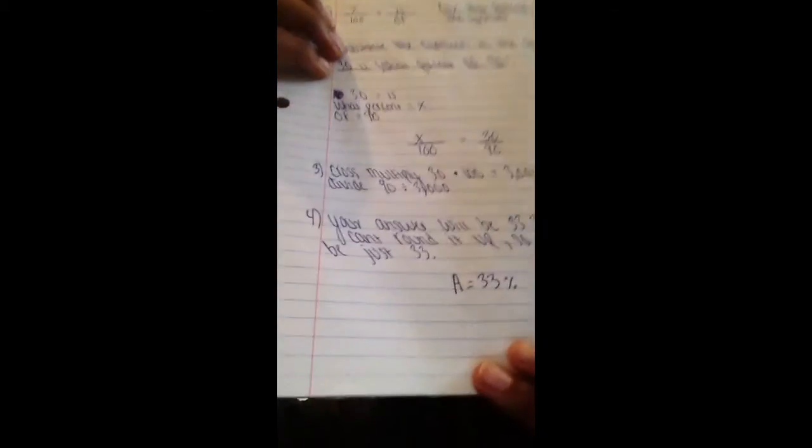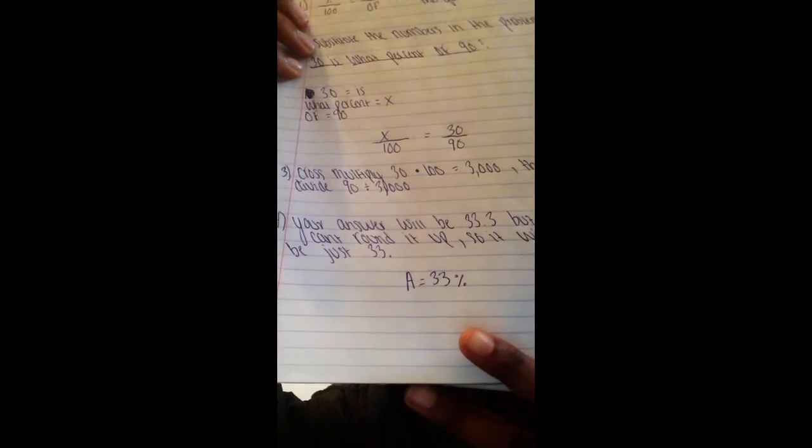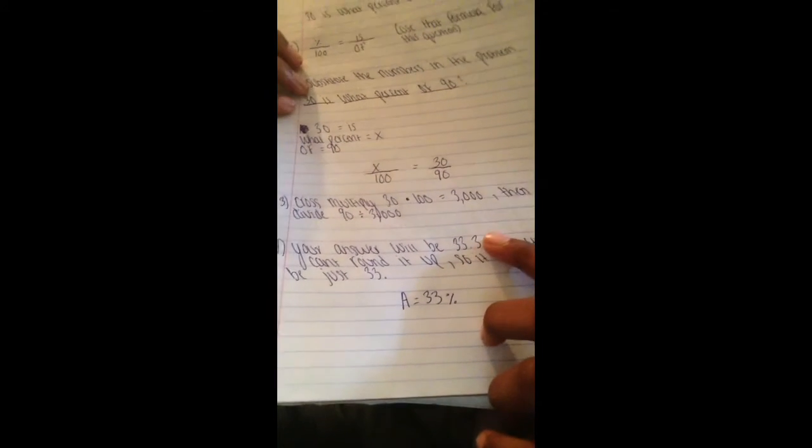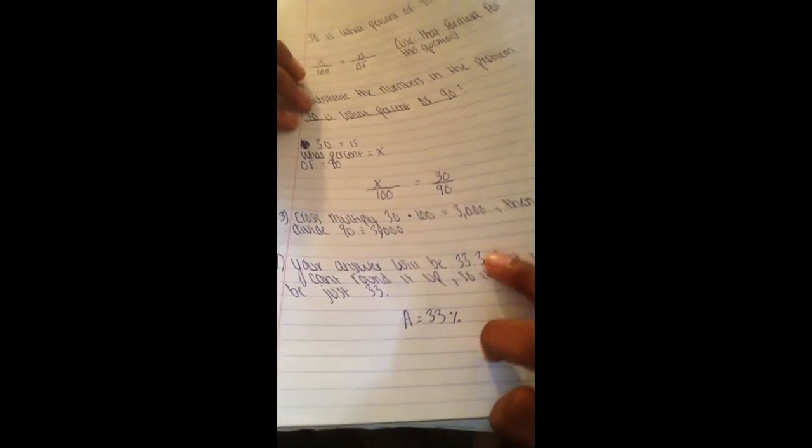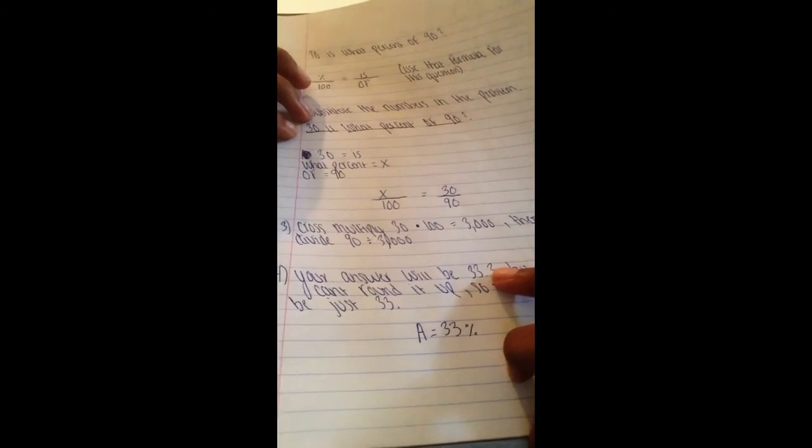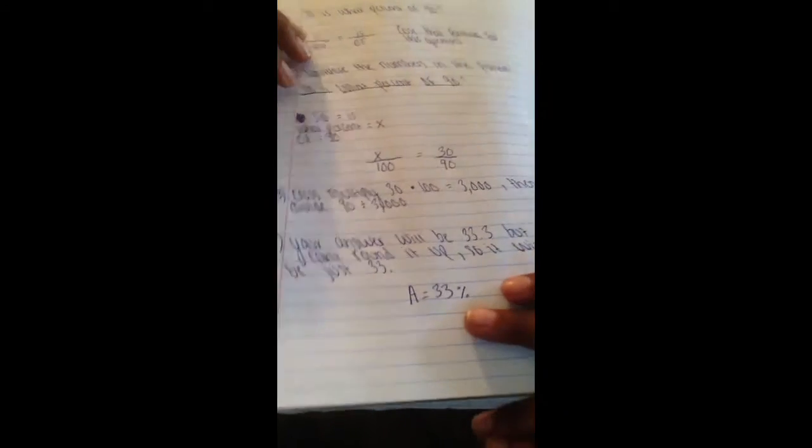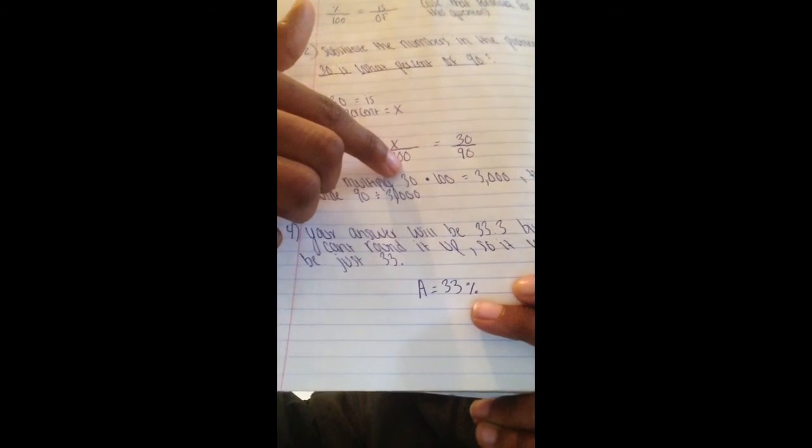So, it says, 30 is what percent of 90? It's 33% of 90. The reason why you couldn't round it up is because, you know, 5 or more, if this was a 5, then it would have been 34. But since this is under 5, then you can't round it up. Let me see how I did that. You cross multiply 30 times 100. Then you divide it by 90. And that's how you find the x. You should use the is over of formula for this problem. It's way better and way easier. But that's it for this video.